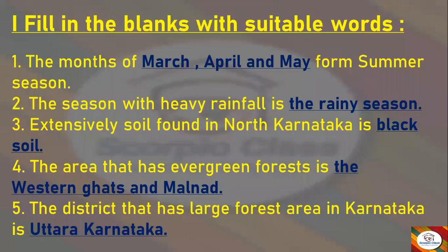First section: Fill in the Blanks with suitable words. First: The months that form summer season — answer is March, April and May. Next: The season with heavy rainfall is — answer is the Rainy Season. Next: The extensively found soil in North Karnataka is — answer is Black Soil.